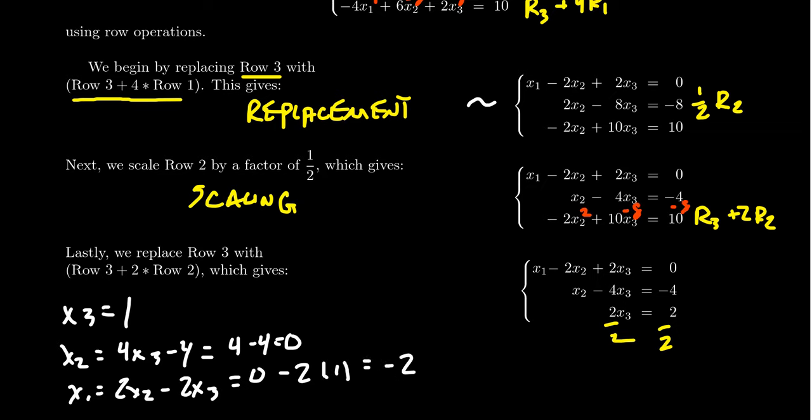So, I've now solved this system of equations. The solution can be unique, it's negative 2, 0, and 1. This is a consistent linear system with a unique solution. And we found it using these row operations.